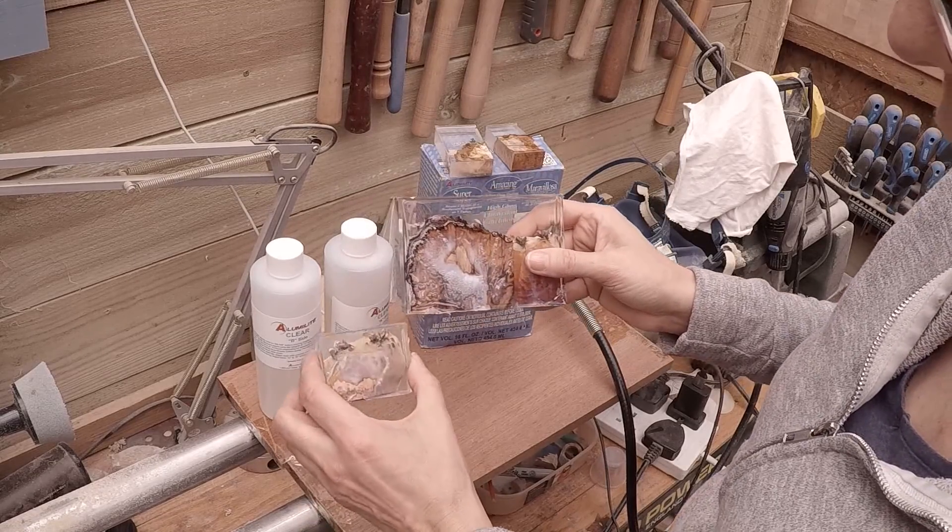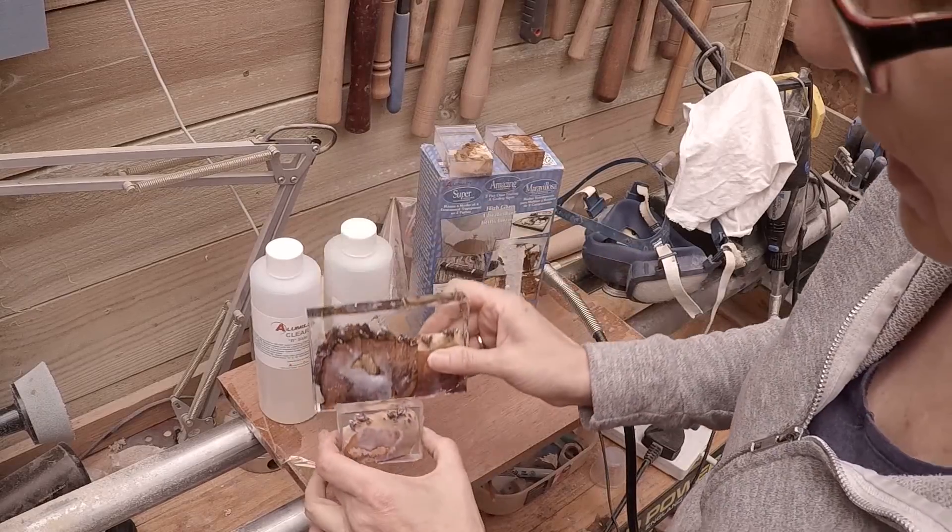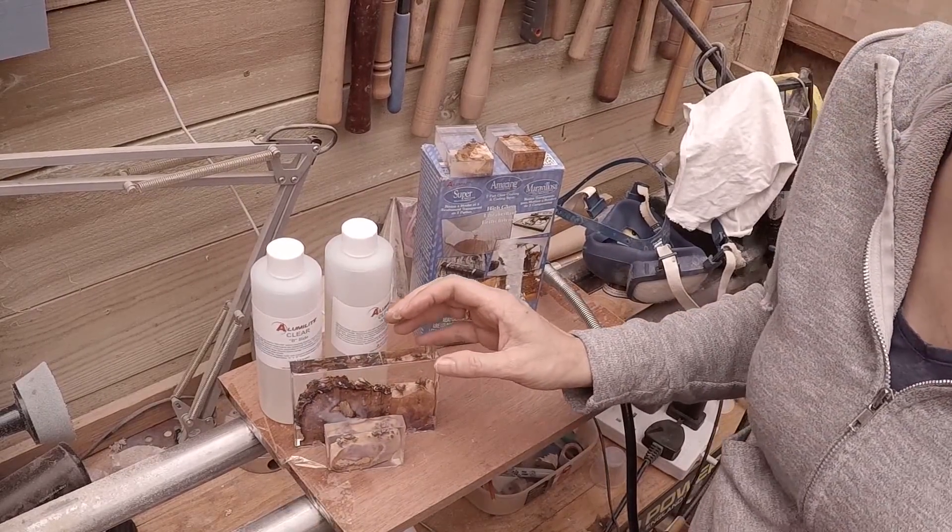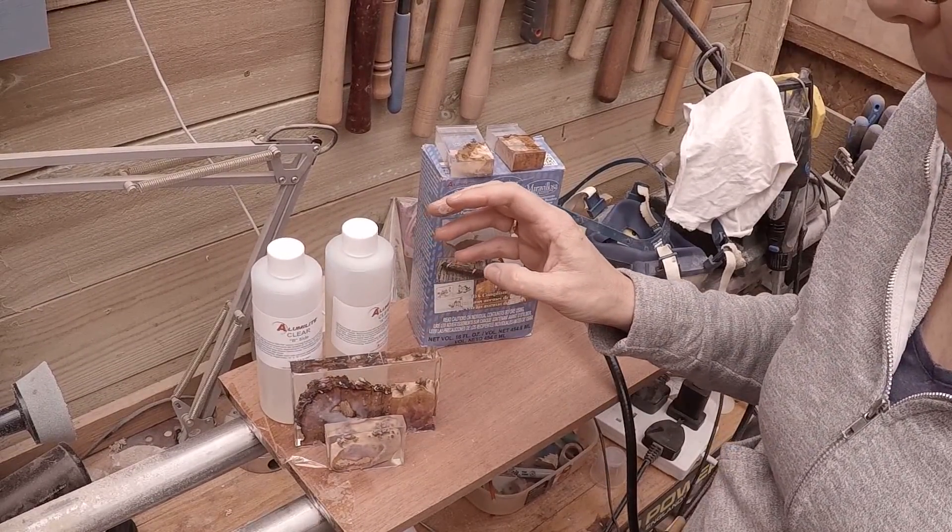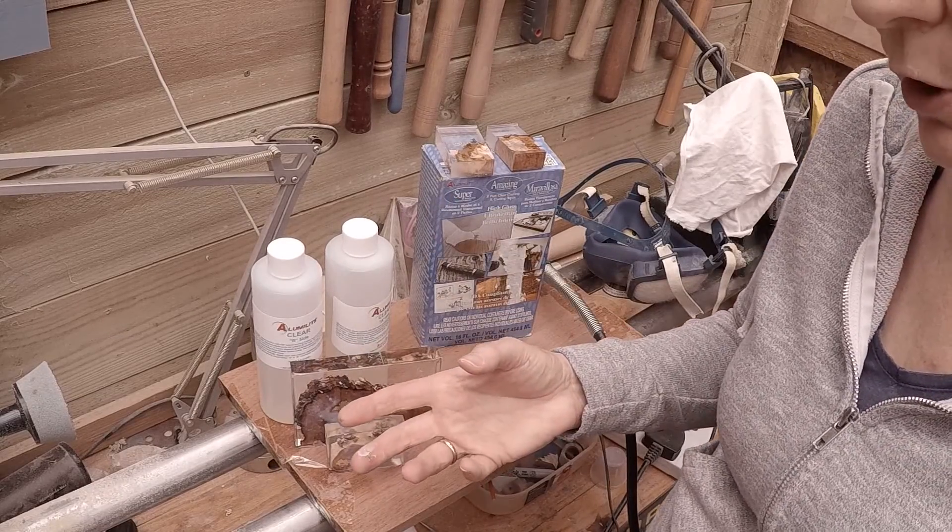But this one, so that's the vacuum chamber and amazing cast. And this is the alumilite clear with just a seven-minute window and the pressure chamber. So a little bit disappointed at the first one, but I think when I get around to doing some of the pen blanks, and I do have some more of the stabilized blanks.